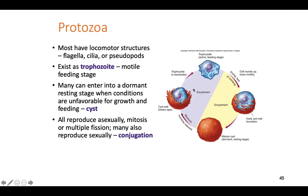Not all protozoans, but some are capable of forming a cyst. If water dries up or they run out of food, they can encyst — forming a bulletproof dormant version that can survive for hundreds of years. When moisture is added back or nutrients return, the cyst wall breaks open and releases the trophozoite back into the environment or the host body. Then the adult trophozoite is back out eating, and it can encyst again if needed.